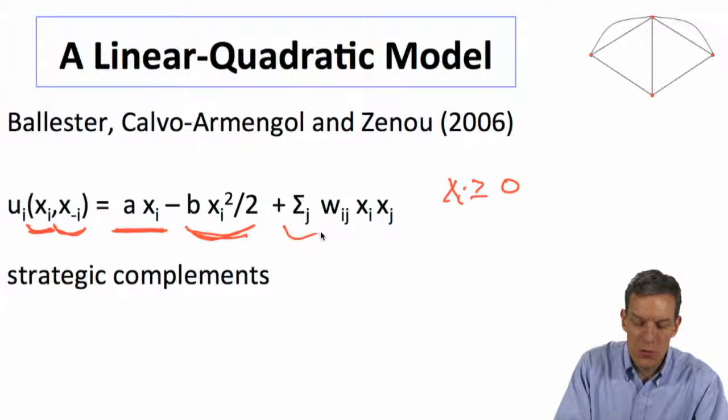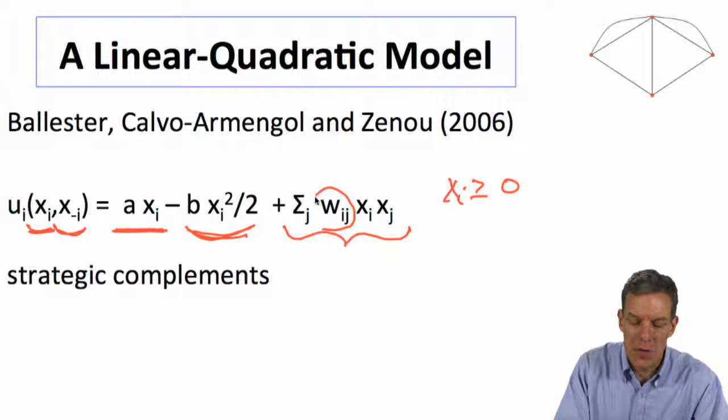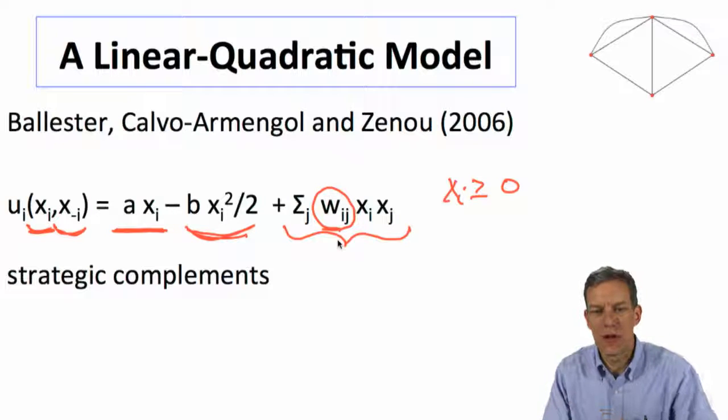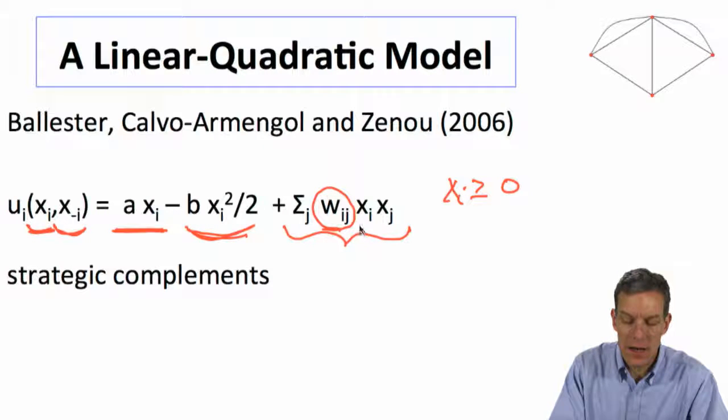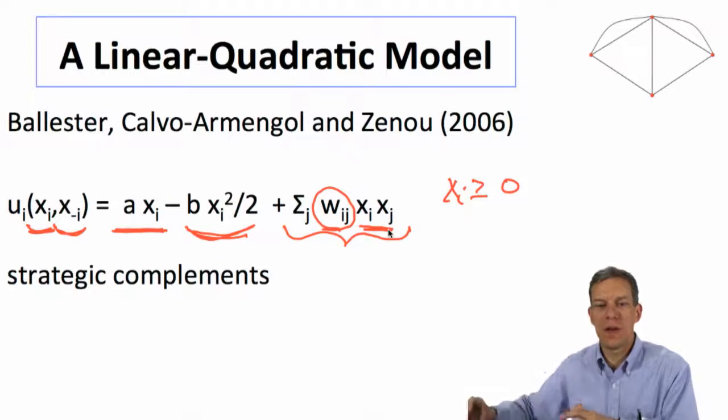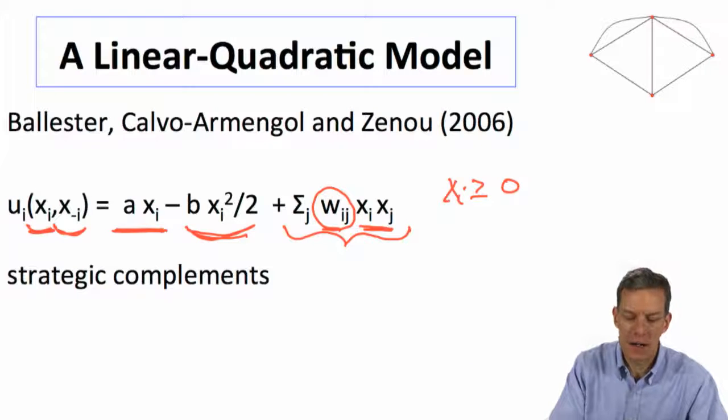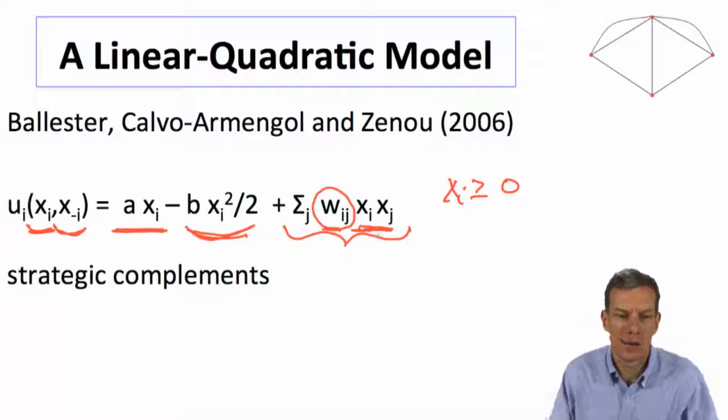But there's also the strategic complement aspect. So what I also do is I look at different friends and I weight them. So I have some weight wij, and what I get is some product of our actions. So if other individuals are taking really high actions, then that gives me an incentive to take higher actions. I get a payoff, a bonus, from taking higher actions when other people take high actions.